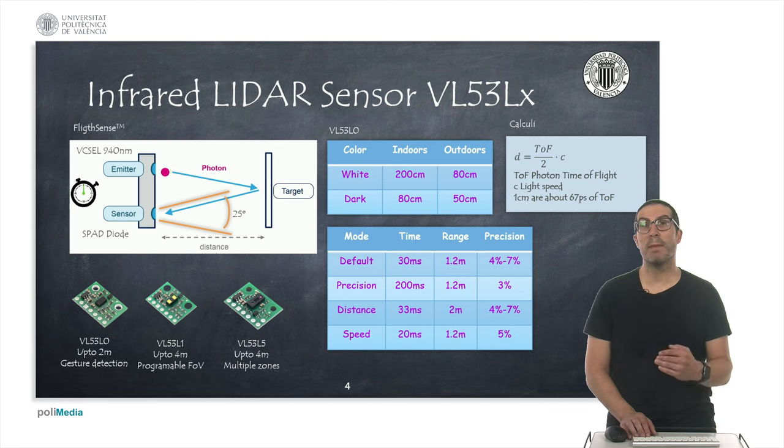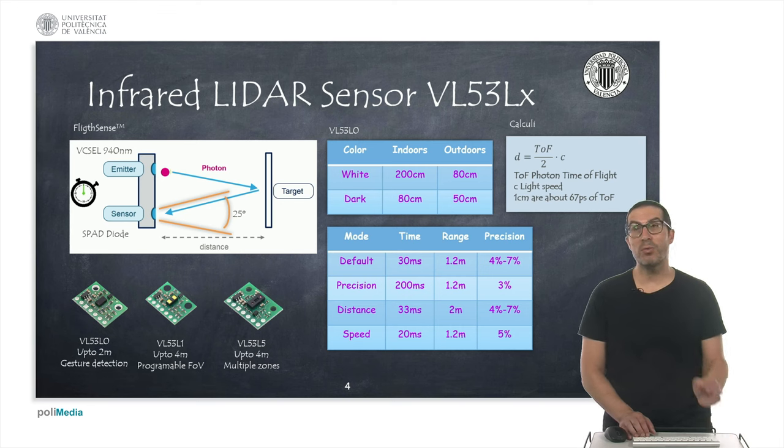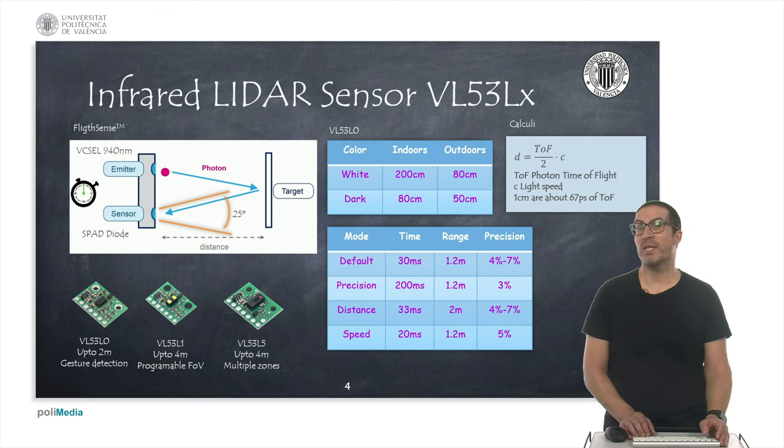Which basically measures the time that the laser ray takes to depart from the emitter and be received by the sensor. And obviously we need for that a very accurate sensor like the SPAD sensor, that for instance, one centimeter basically with the speed of the light represents 67 picoseconds of difference.